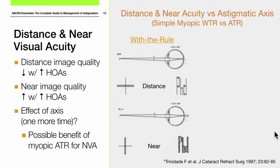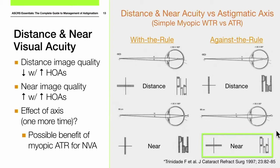Looking at the effect of axis on astigmatism — distance and near acuity versus astigmatic axis with simple myopic with-the-rule or against-the-rule astigmatism: with simple myopic against-the-rule astigmatism, as we bring the object in and look at near focus, we're going to see more clarity in the vertical lines of letters, which actually helps our ability to read up close.